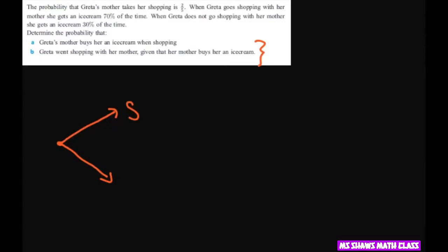Therefore not shopping, called S prime, is going to be three-fifths and that equals 0.6. Now if she goes shopping she gets ice cream 70 percent of the time.